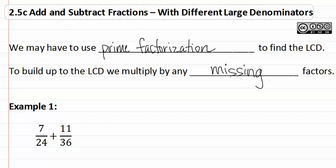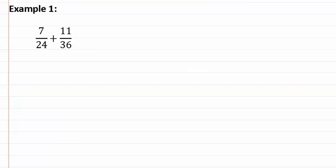Let's look at example one. Here's example one: seven twenty-fourths plus eleven thirty-sixths. As you can see, the denominators are very large, and it's hard to determine what the least common denominator is using mental math. Therefore, we will find the least common denominator using prime factorization.